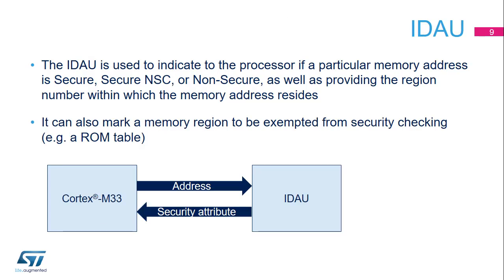The IDAU is external to the ARM core. Through an address decoding logic, it returns to the core the security attribute of the region as well as its number. It can also mark a region to be exempted from security checking, such as debug units. The CoreSight specification, which is a framework for debugging ARM cores, implements another mechanism to assign security attributes to debug units based on authentication signals sampled by these units.